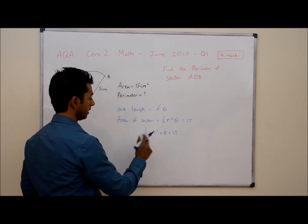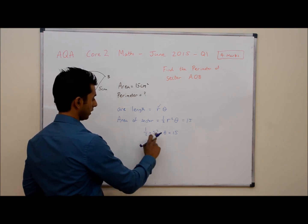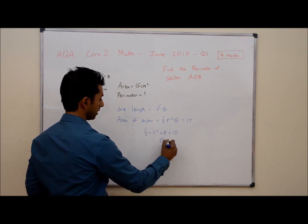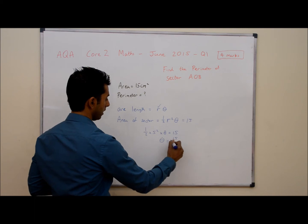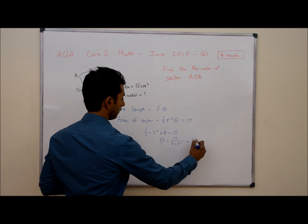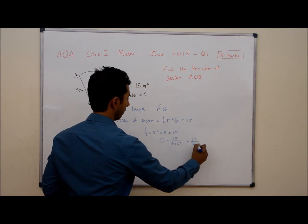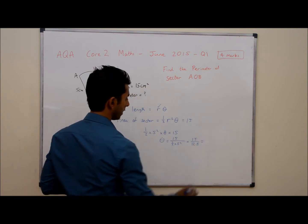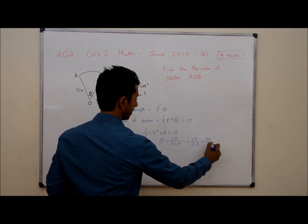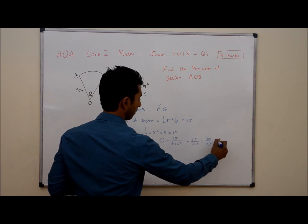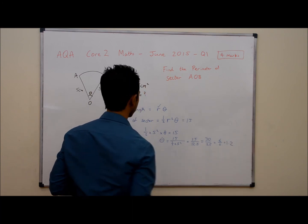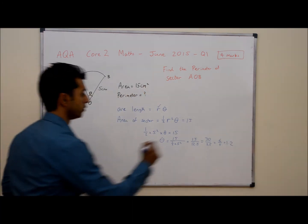So to find theta we do half times 5 squared, so that's 12.5. We can take that over to the other side. So theta is equal to 15 divided by half times 5 squared, so that's 15 divided by 12.5. We can type that into our calculators or simplify it as a fraction, that's the same as 30 over 25 so that would give us 6 over 5 or 1.2. So the angle is 1.2 radians.